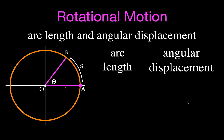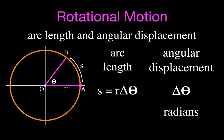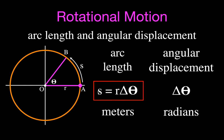We can derive the equation relating arc length to angular displacement. If you know the angular displacement, you can calculate the arc length by multiplying the radius in meters by the angular displacement in radians. The radius must be in meters and the angular displacement in radians, giving you the arc length in meters: S = r × Δθ.